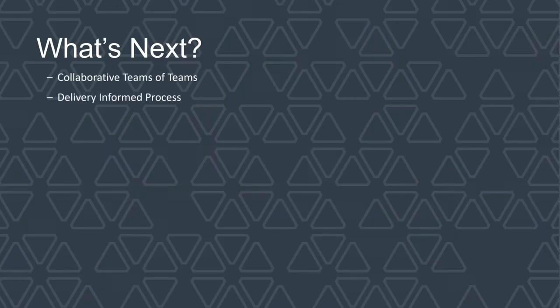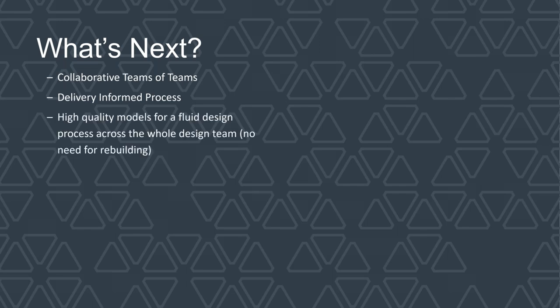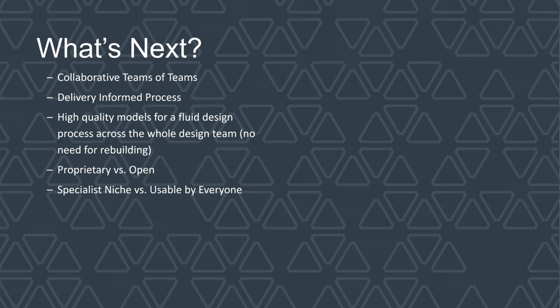What's next? Collaborative team of teams. Delivery-informed process — that's delivery for construction. High-quality models right from the design stages — we don't wait until later to really do that model. Open software: Rhino, Revit, Tekla — it's all open source and you have access to the APIs. We don't want to be specialists. We want to be the standard for the industry because we think there is benefit to that. Empower people to use their own tools — it doesn't have to be one tool over the other.